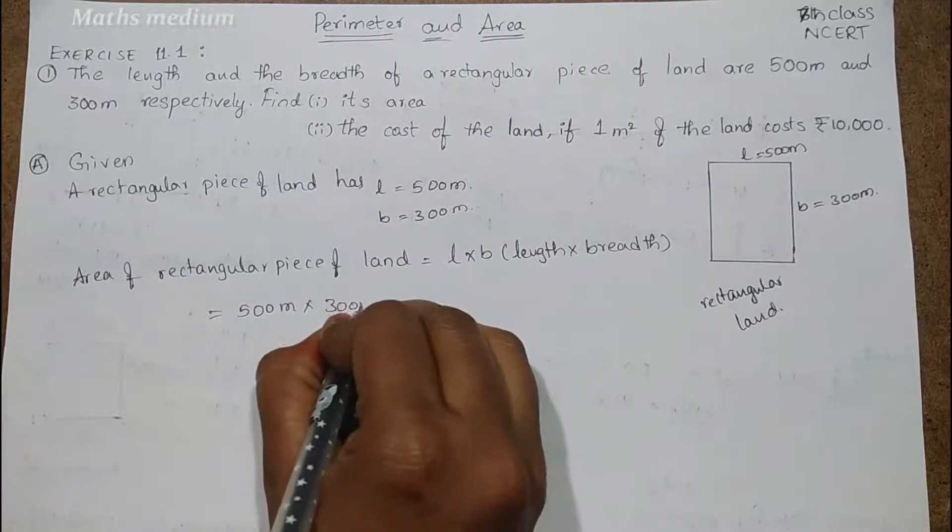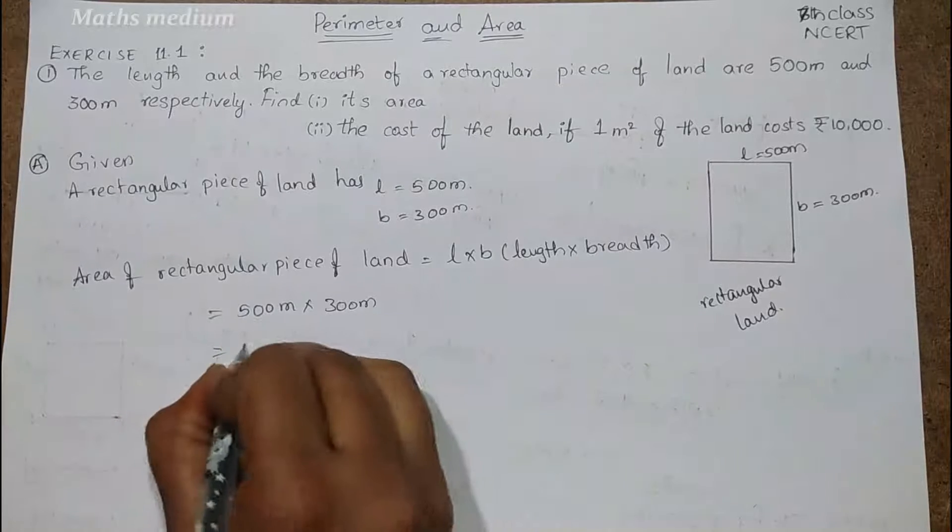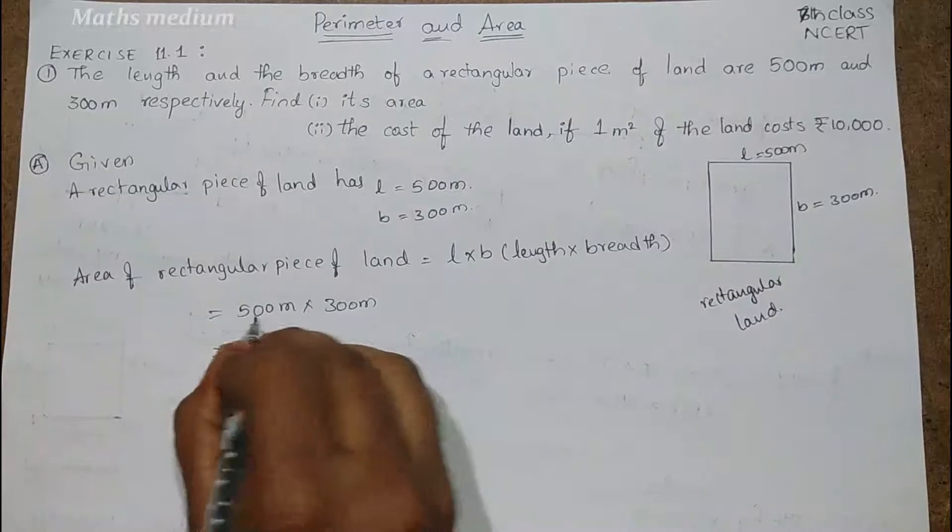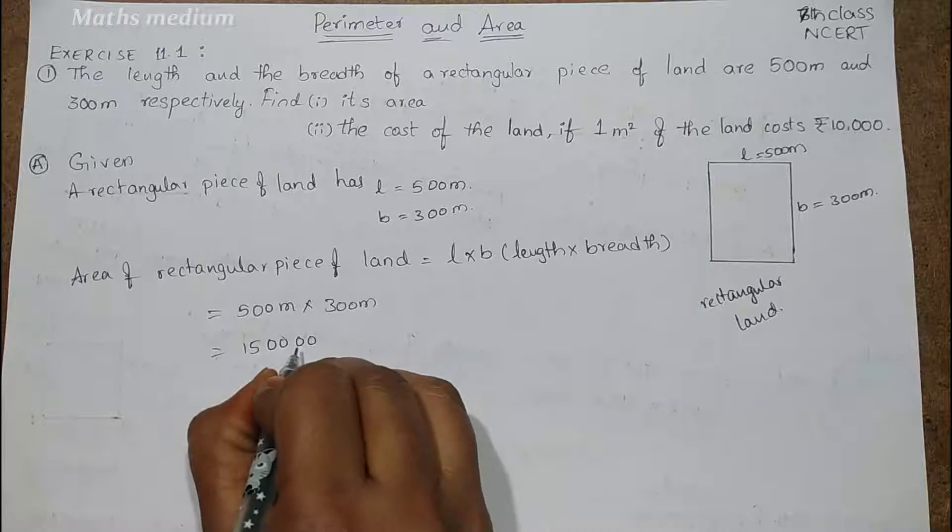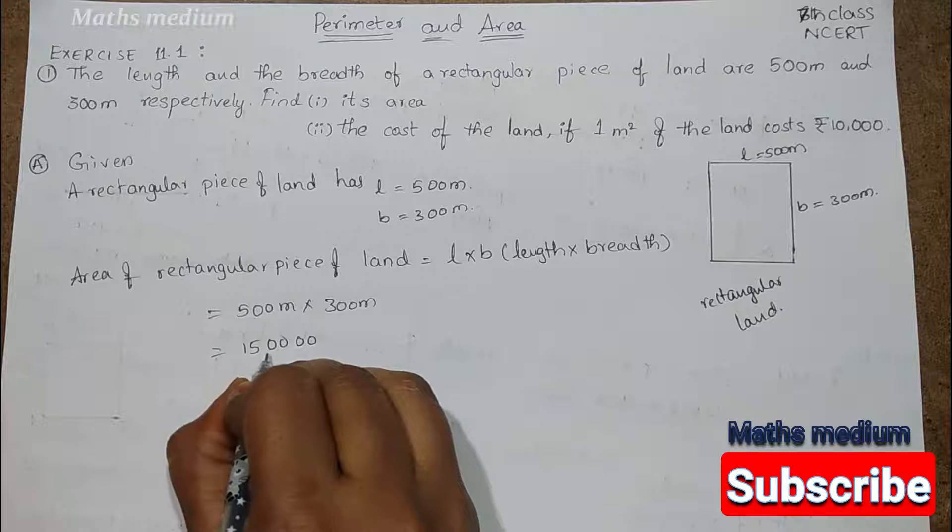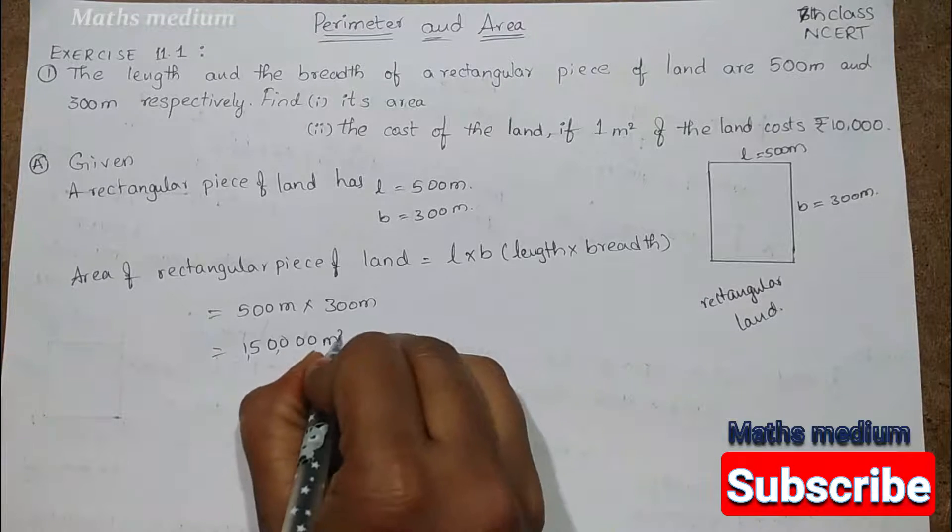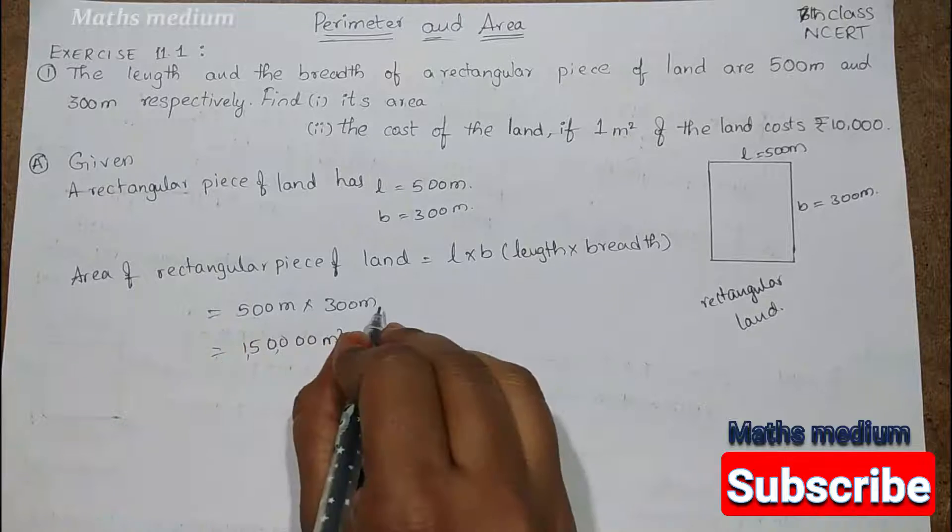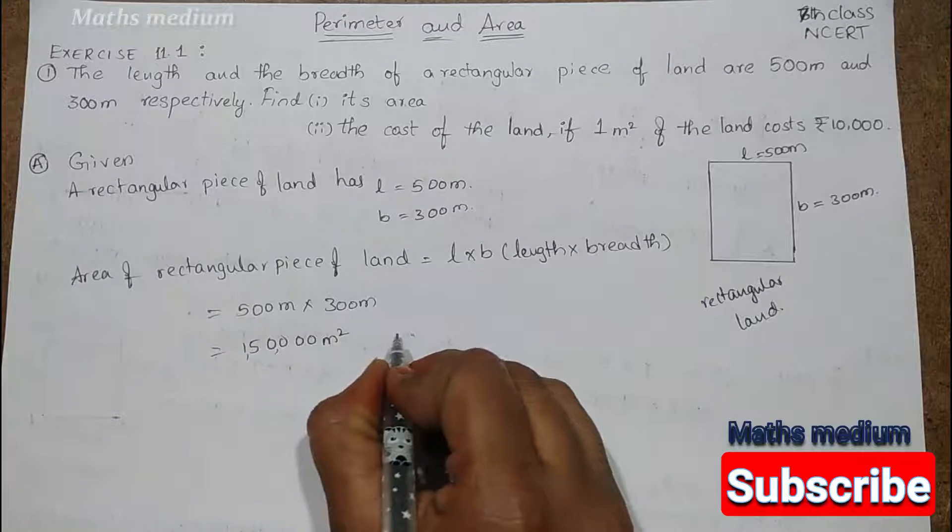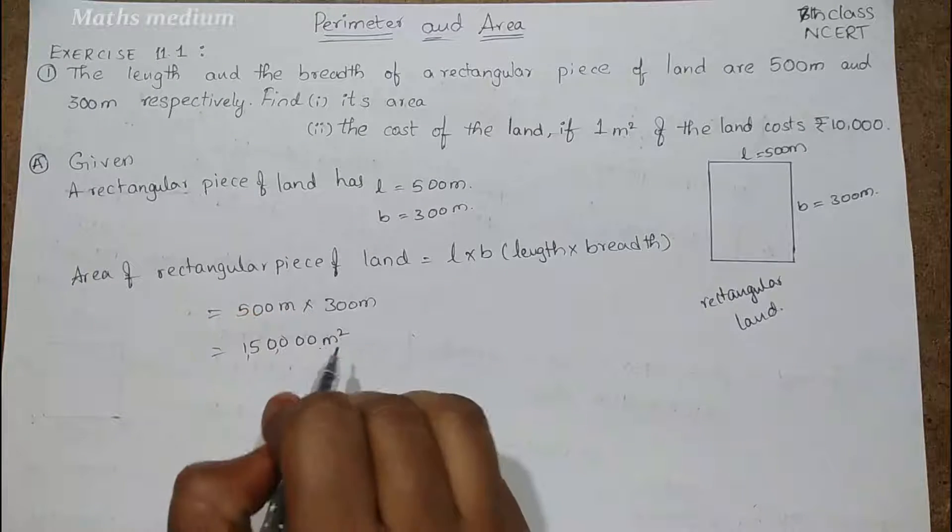Now 5 into 3 is 15. Two zeros here and two zeros here: 1s, 10s, 100s, 1000s, 10,000s equals 1 lakh. So 1 lakh 50,000 meter square. M into M is meter square. So this is the area of the rectangular piece.